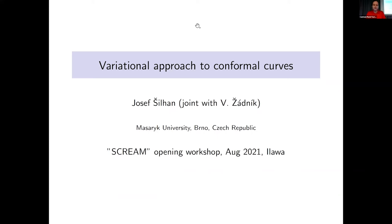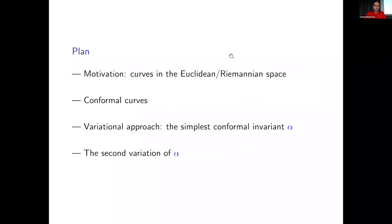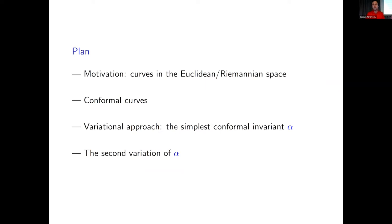Thank you for the introduction. As you can see, the title of this talk is very similar to the previous one — the topic is almost the same. We worked independently on the same thing at the same time, but my approach — it's joint work with Wojtek Shadnik from Masaryk University — is rather different. It will go back to the first lecture today by Rod Gavr, and I will use tractors intensively throughout the talk. The motivation: first I review what everybody knows in the Euclidean case, then I start with basic theory of conformal curves and the functional where we can look for critical curves — or the one functional, since there are more conformal invariant functionals — which appear naturally in the general study of invariant calculus for conformal curves.